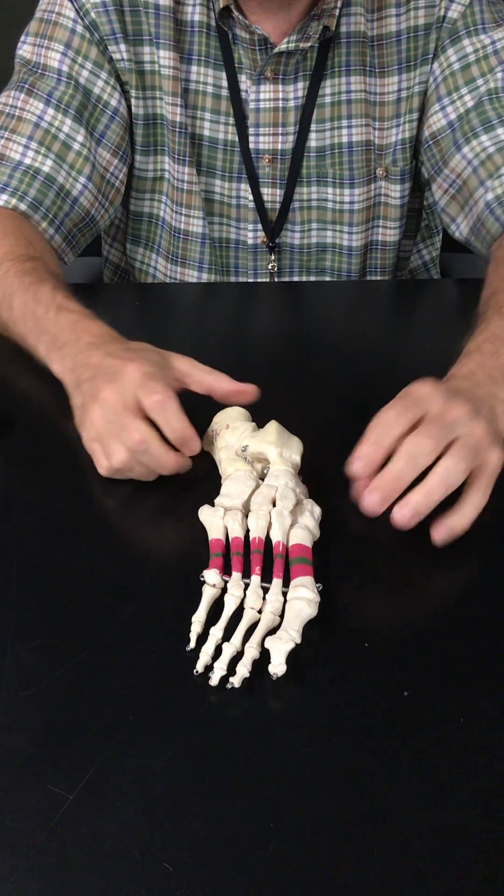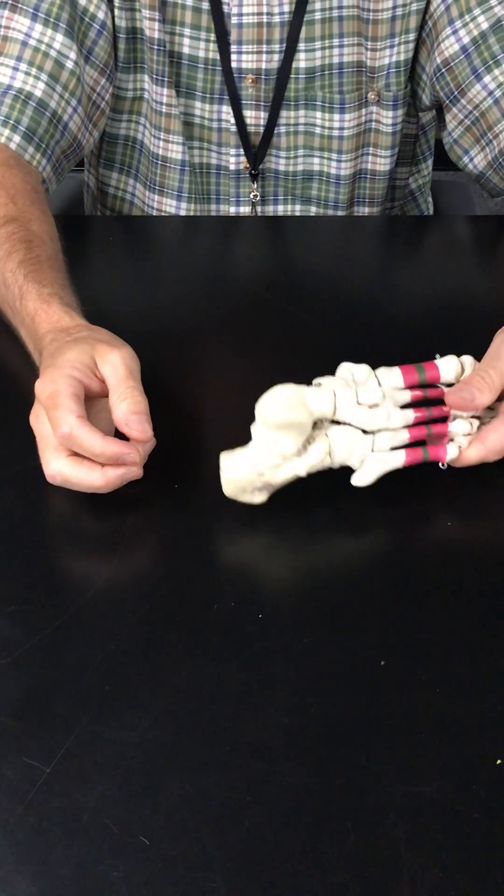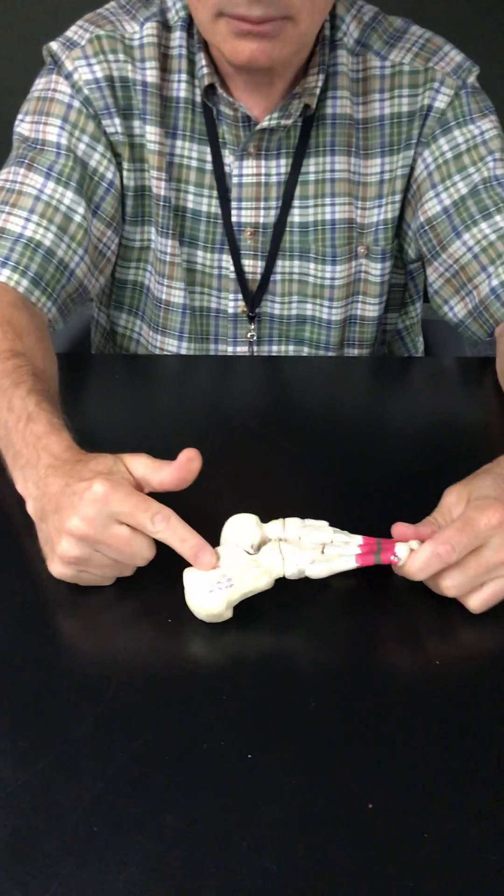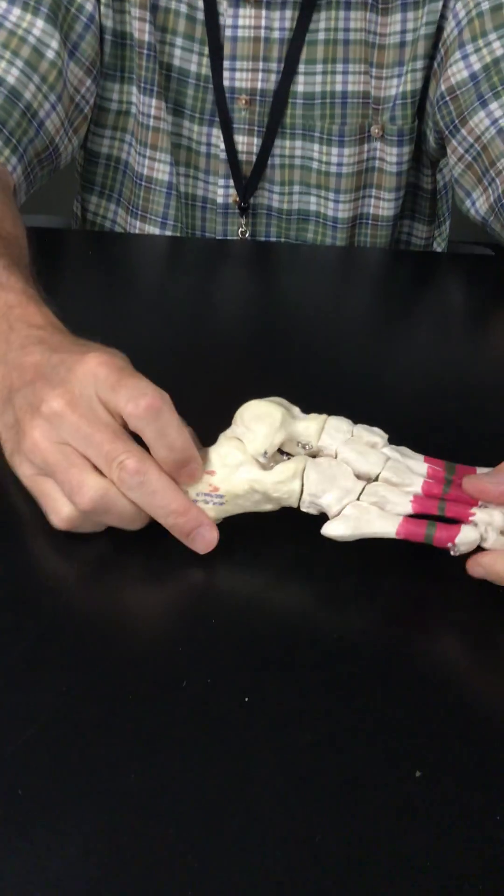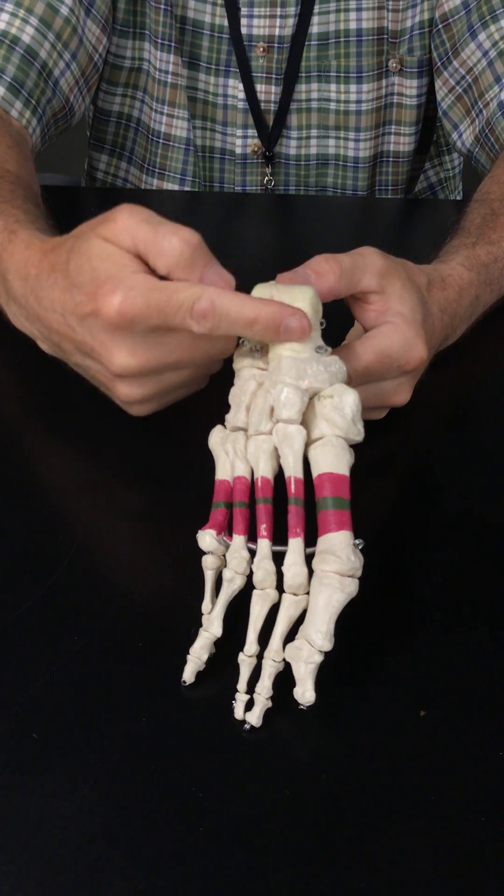So let's name the tarsals. The largest, which is also the heel of your foot, that's the calcaneus. Sitting on top of the calcaneus, which forms the true ankle joint, that's the talus.